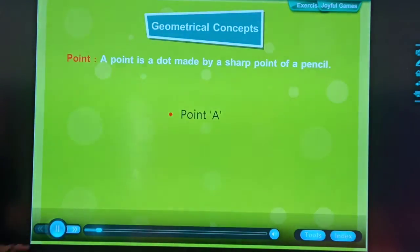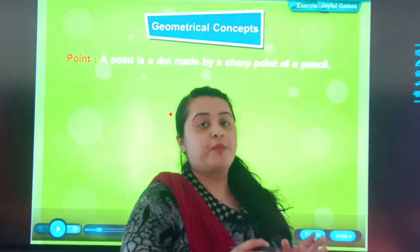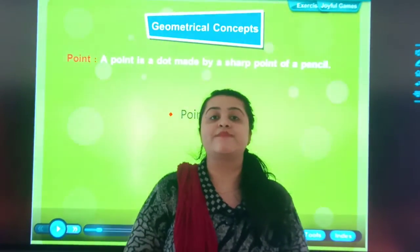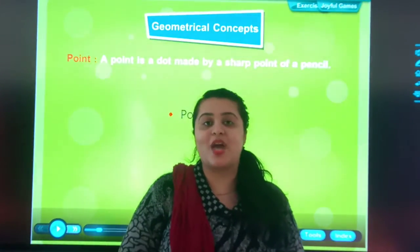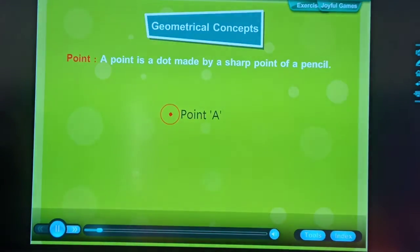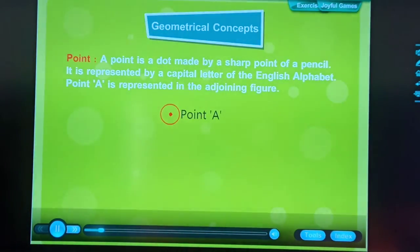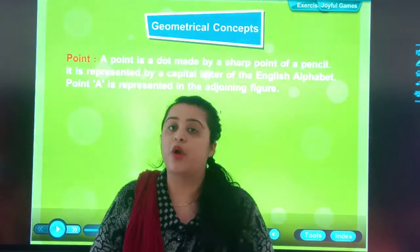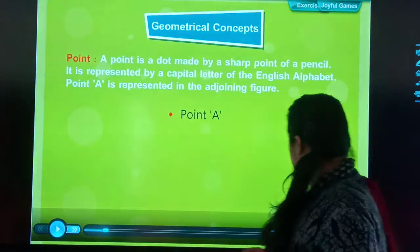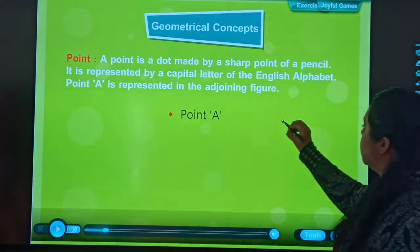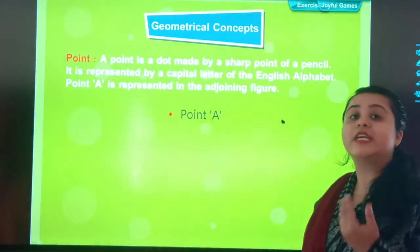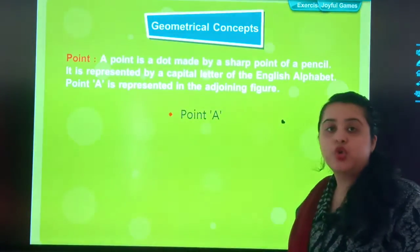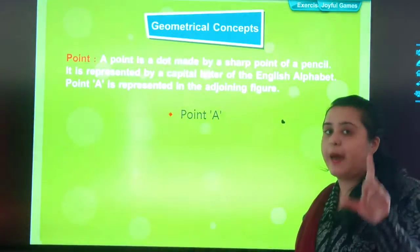Geometrical concepts. Point. So students, from now, we will be starting with our some geometrical concepts that are included in our main chapter. A point is a dot made by a sharp point of a pencil. It is represented by a capital letter of the English alphabet. Point A is represented in the adjoining figure. So students, the first topic is point. If I make a sharp point with a pencil, this will become my point.